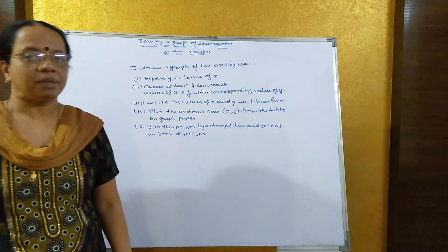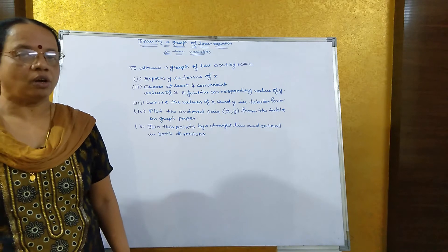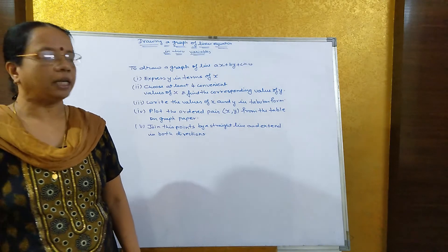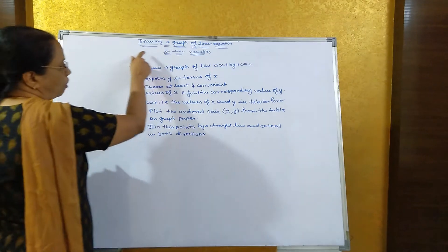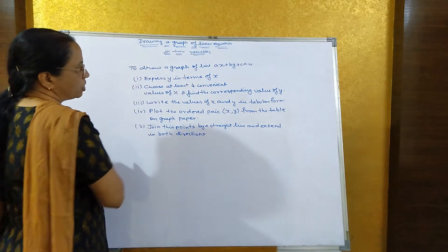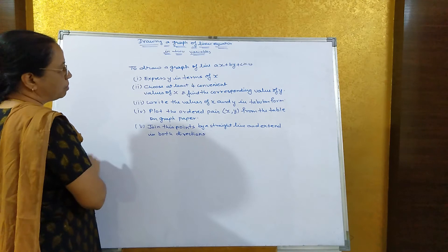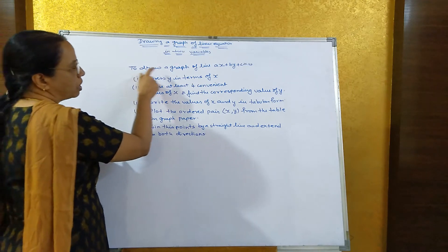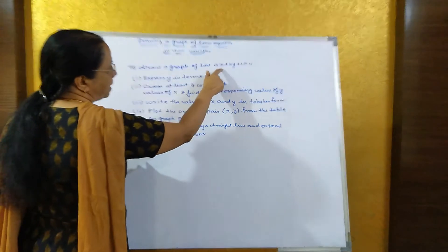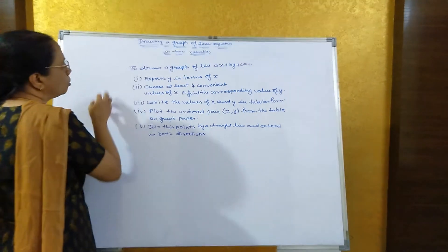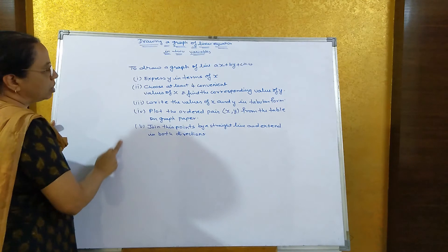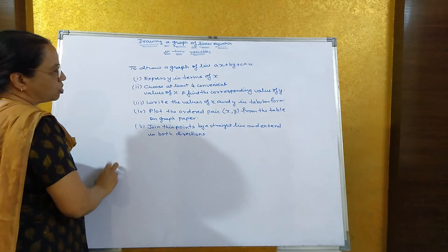We can solve simultaneous equations graphically. So, how to draw a graph of a linear equation in two variables? To draw a graph of the line ax plus by plus c equal to 0, remember all these five points.